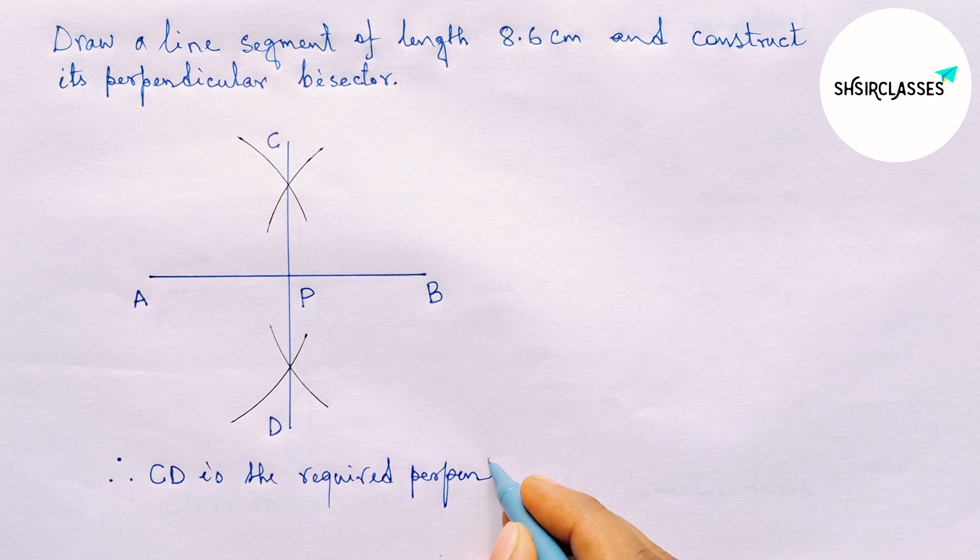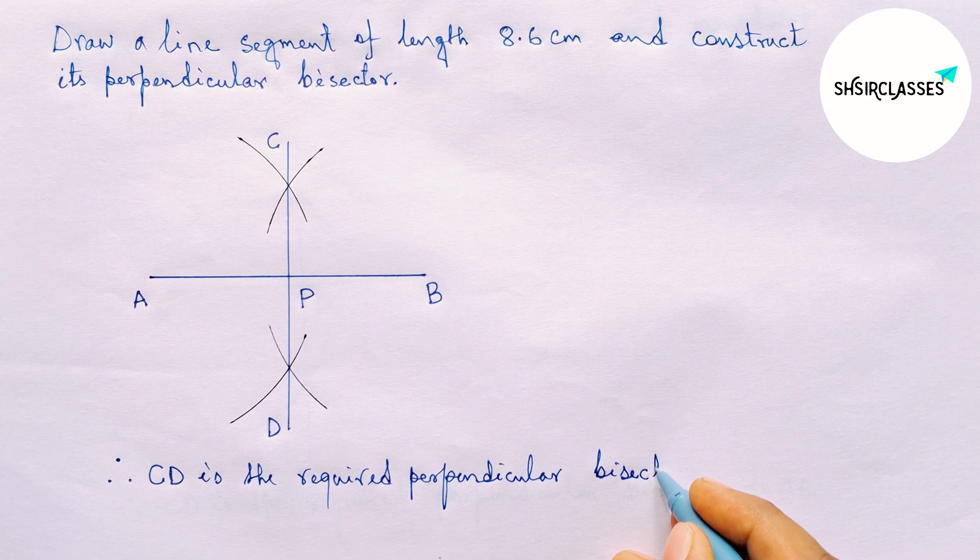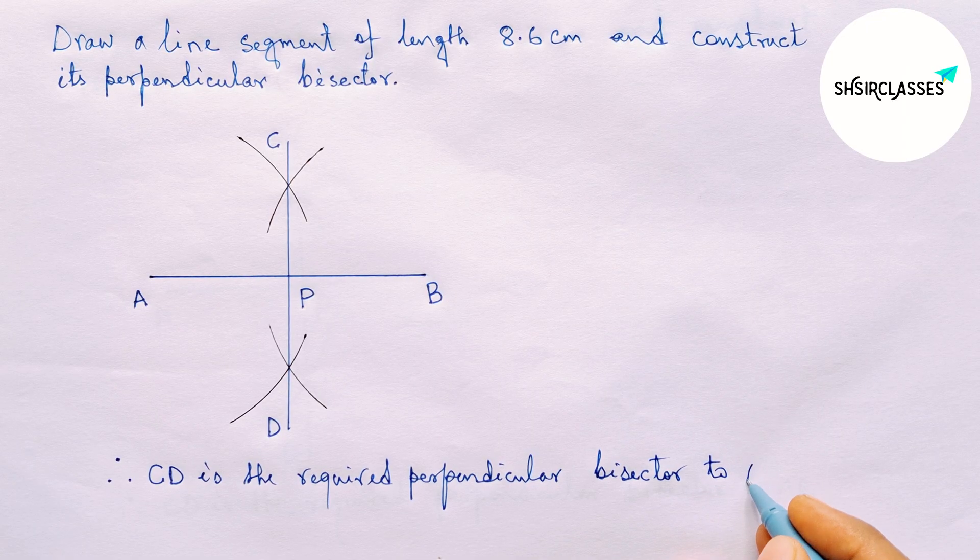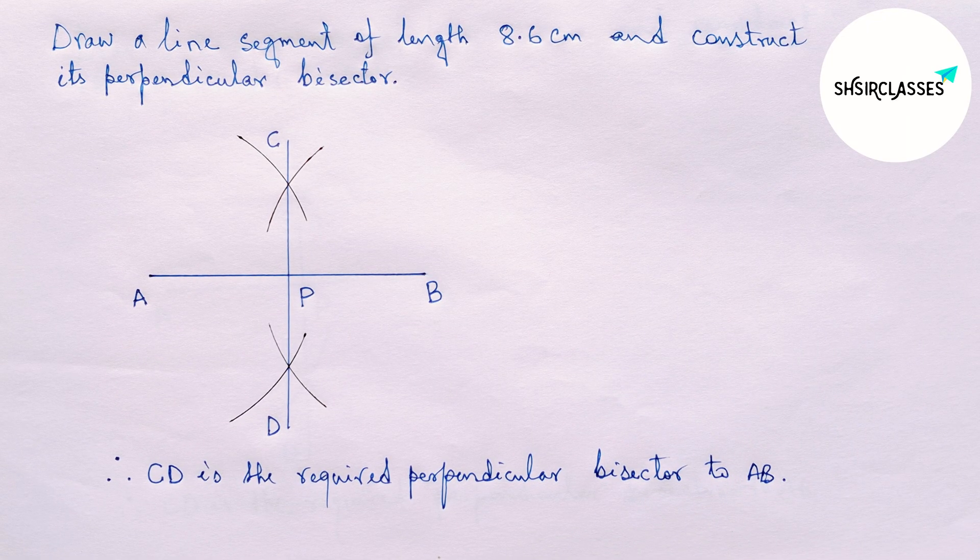By this way, you can construct a perpendicular bisector to a given line. So that's all. Thanks for watching, please share it.